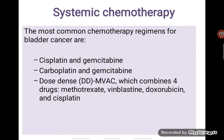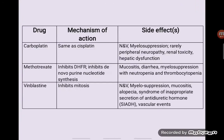Moving on to systemic chemotherapy — compared to local, the drugs here are administered either orally or intravenously. The most common regimens used now are cisplatin and gemcitabine, carboplatin and gemcitabine, or what we call dose-dense MVAC. MVAC is a combination of four drugs including methotrexate, vinblastine, doxorubicin, and cisplatin.